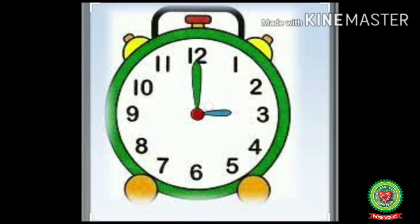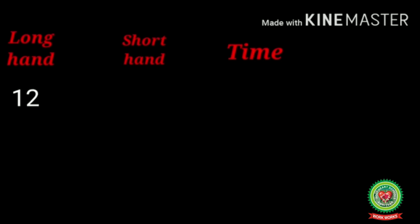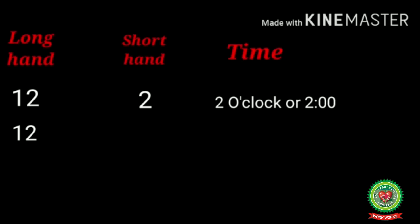I hope you all have understood. Now let me check how much you have learned. I will tell you where the hands are and you will tell me the time. If the long hand is at 12 and the short hand is at 2, what is the time? Yes, the time is 2 o'clock or 2:00. Now the next example: the long hand is at 12 and the short hand is at 6, then what's the time?